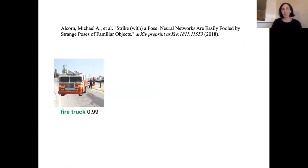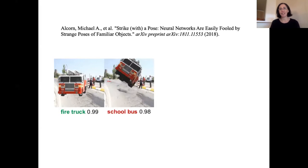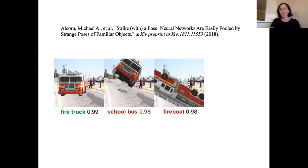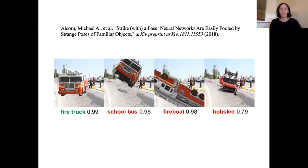We've seen this in many different examples. This group took images that were correctly classified by deep neural networks with 99% confidence, and they photoshopped them into different poses. Here we have a fire truck. The neural network is 98% confident that this is a school bus, 98% confident this is a fire boat, a bobsled. Somehow, these neural networks are perceiving something very different than what we humans perceive in these images, even though they're matching or exceeding human performance on standard benchmarks.